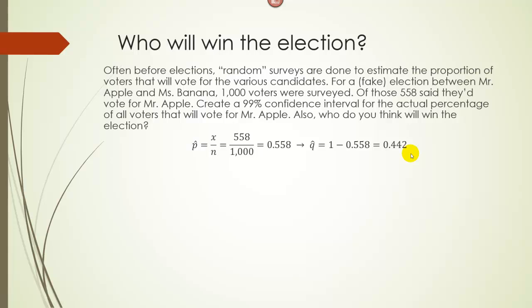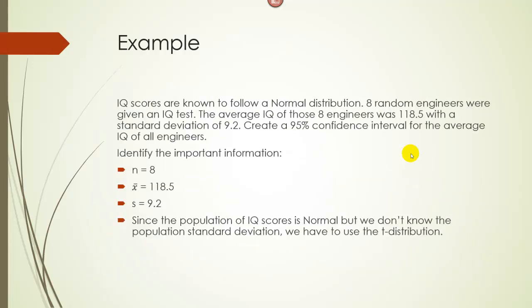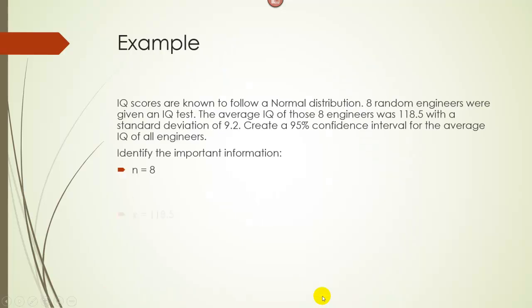If there's only these two candidates, 44.2% will vote for Ms. Banana. Our Z value is going to be 2.575 from the table I showed you in previous lectures. Remember, the last line of the T table is the Z table. Since we're generating a 99% confidence interval, our alpha over 2 value is 0.005, so we take the infinity line and get 2.575.